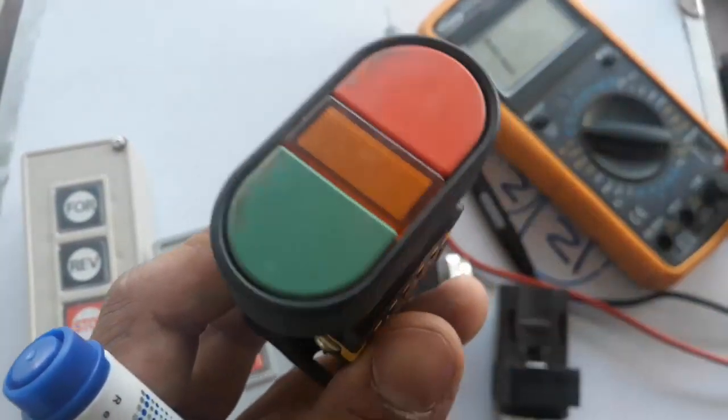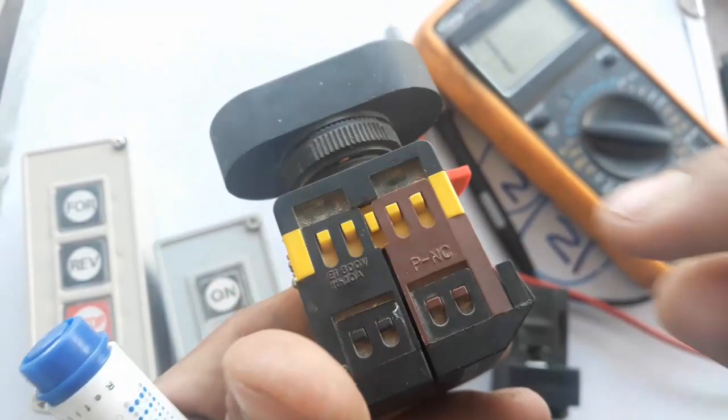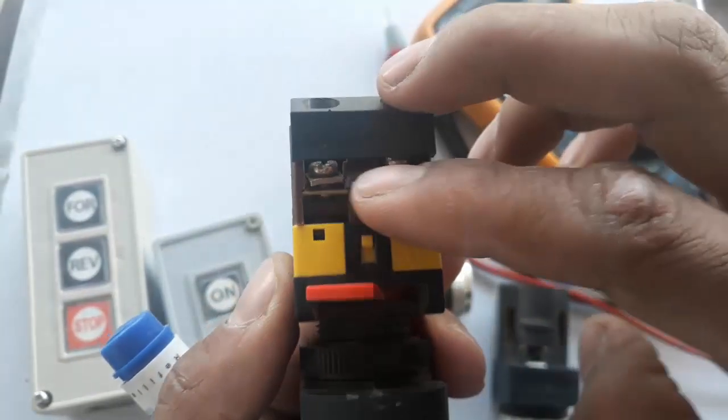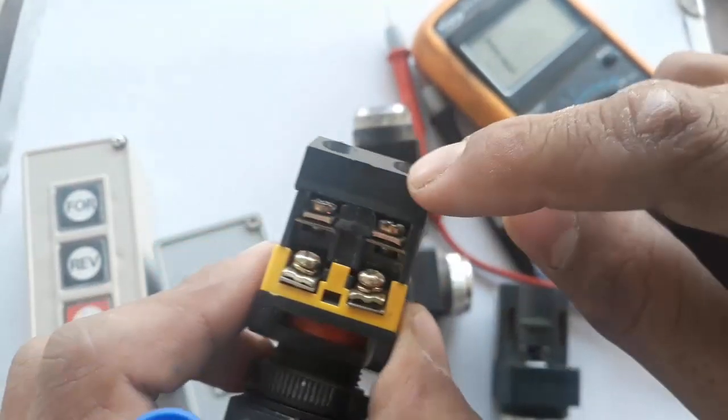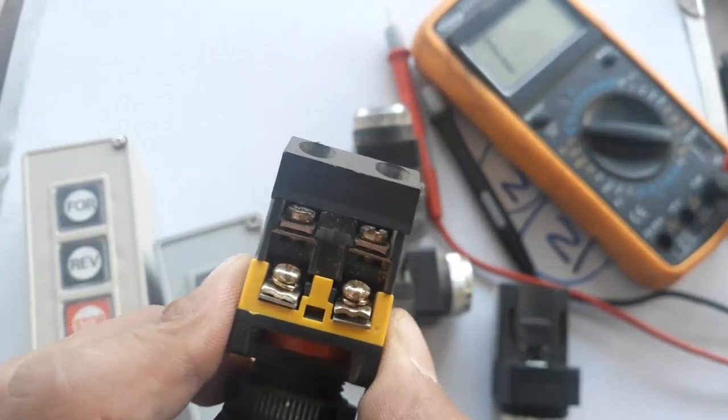Just like this switch, it also has NC and NO contacts. So this is the NC portion and this is the NO portion. These two contacts have connectivity with one another, and these two contacts are normally open with one another.